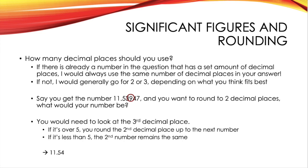So, with rounding, you always look at the number next to how many decimal places you're rounding to. So, if you're rounding to two decimal places, you look at the third number. If you're rounding to three decimal places, you look at the fourth number, and so on.